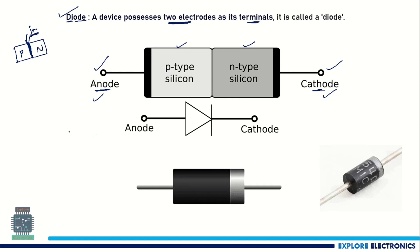The symbolic representation of this diode is a triangle with a line. The line indicates the junction and the triangle indicates the direction of current flow. This triangle is heading towards the cathode from the anode, so the current flows from anode to cathode in only one direction.